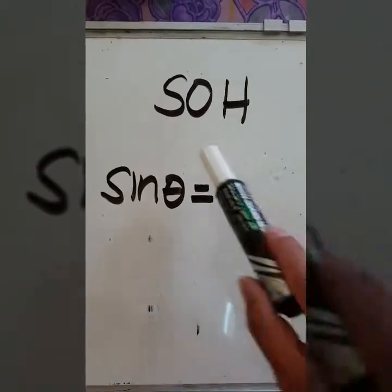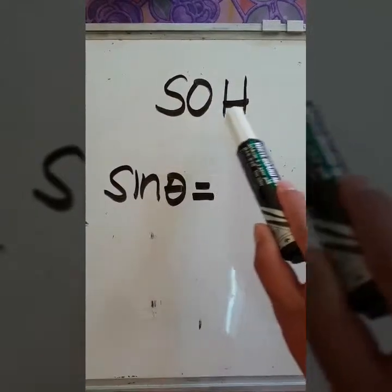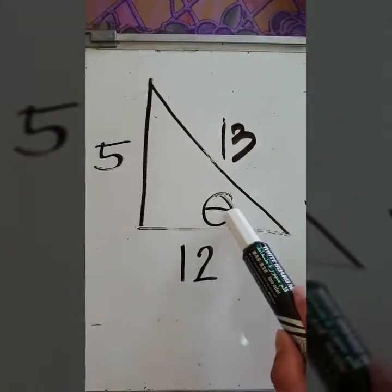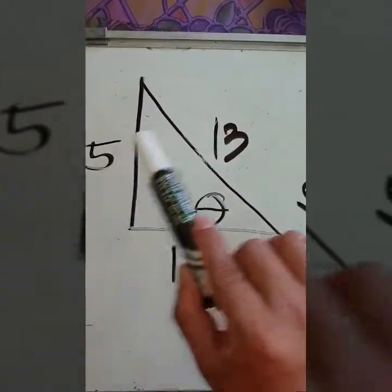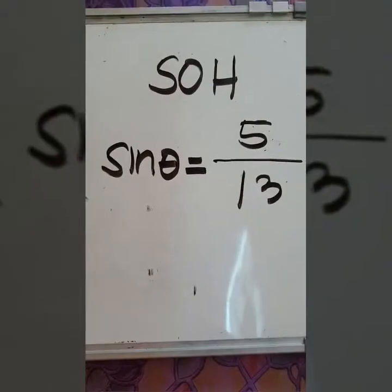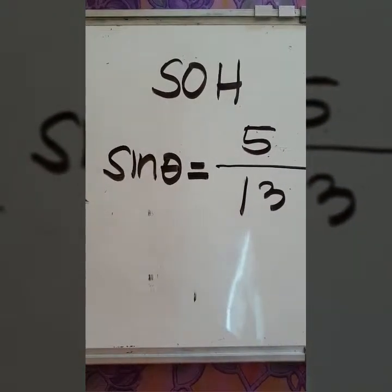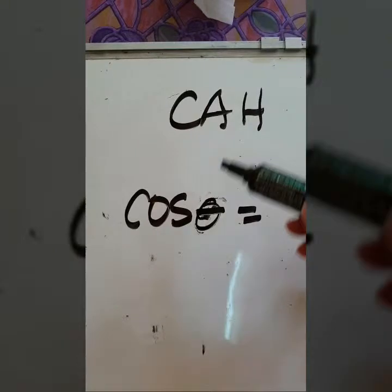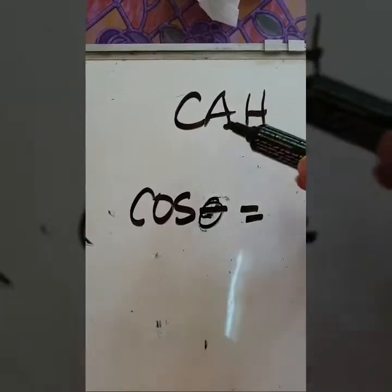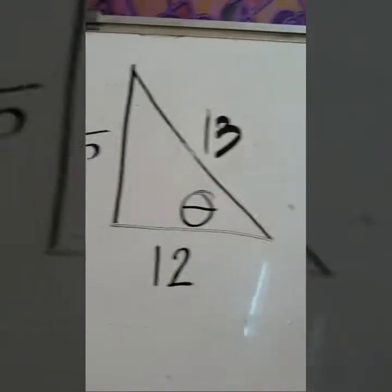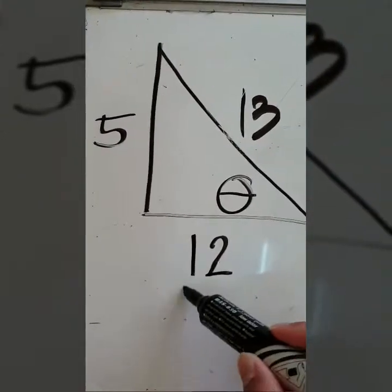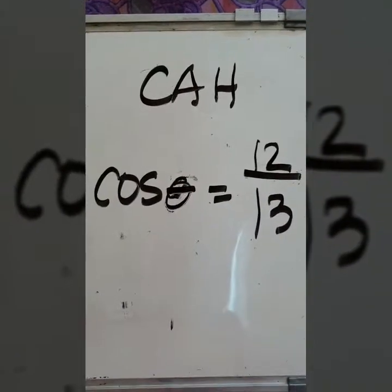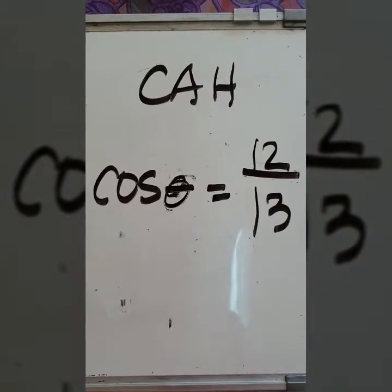Let us solve for the trigonometric ratios, starting with sine. Using SOH, sine theta equals opposite over hypotenuse. Considering the triangle, the opposite side is 5 and the hypotenuse is 13. Therefore, sine theta is equal to 5 over 13. Next is cosine, which is CAH. Cosine theta equals adjacent over hypotenuse. The adjacent side is 12 and the hypotenuse is 13. Therefore, cosine theta is equal to 12 over 13.